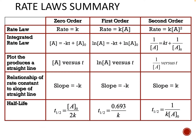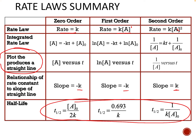Here's our summary of rate laws. Zero order: rate = K. First order: rate = K[A]¹. Second order: rate = K[A]². The integrated rate laws are all listed. The plot that produces a straight line: concentration of A vs. T for zero order, ln[A] vs. T for first order, and 1/[A] vs. T for second order. For zero and first order, slope = negative K; for second order, slope = K. The half-life equations are listed as well — I won't give those on an exam, but you can always solve using the integrated rate law by plugging in your initial concentration and half of that.